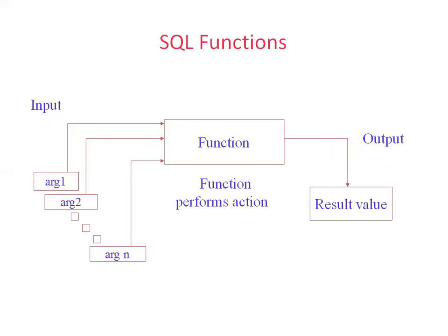A function in SQL can have multiple arguments. Consider a calculator — when you perform addition it requires two numbers and provides one output. Or consider a fan — you switch it on and the fan runs. Any functionality takes some input parameter and provides an output. The input can be multiple, single, or even no parameter at all.